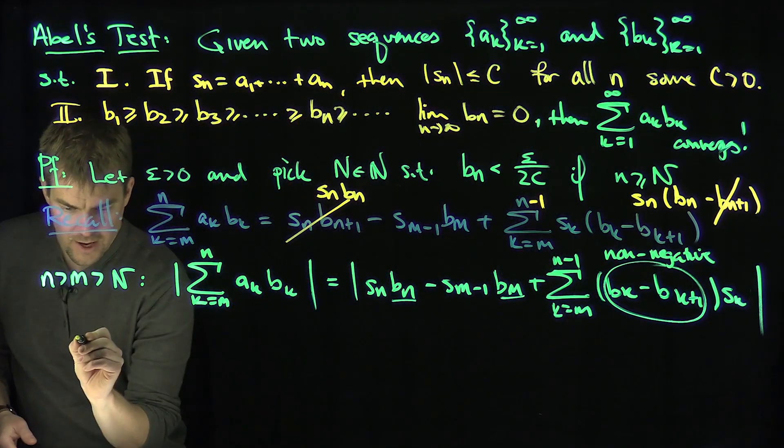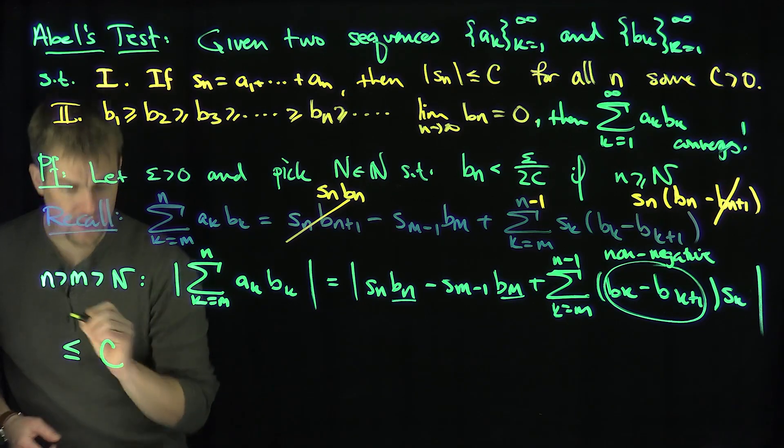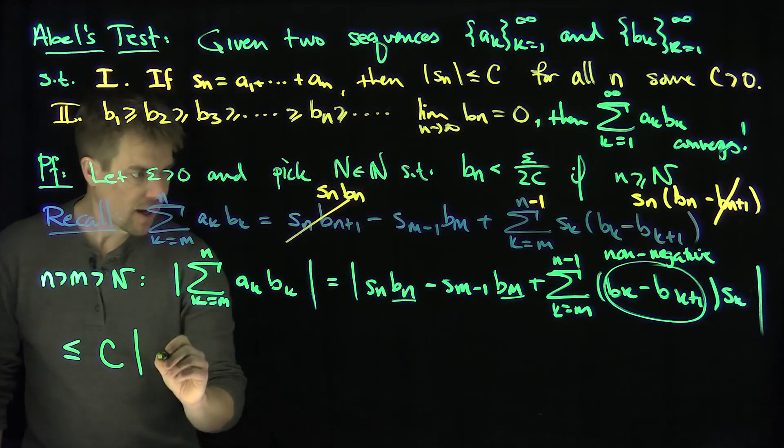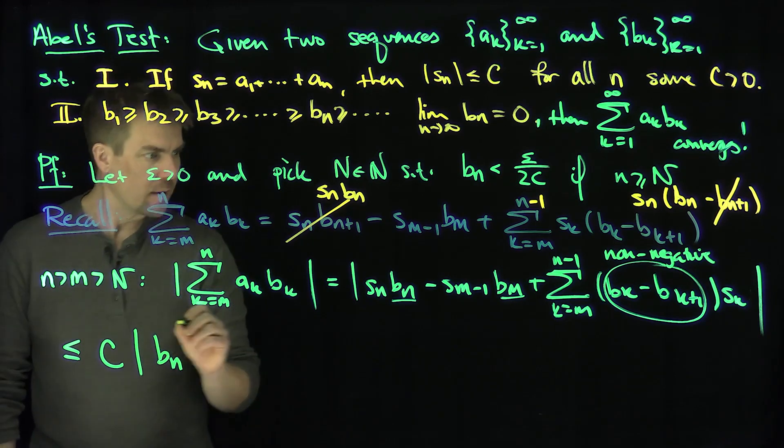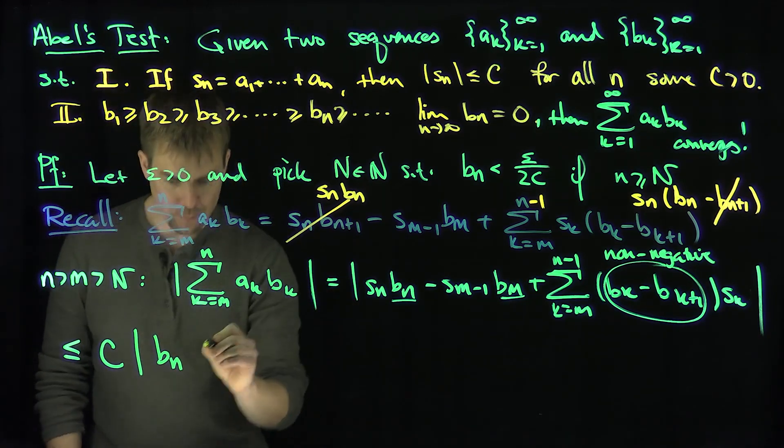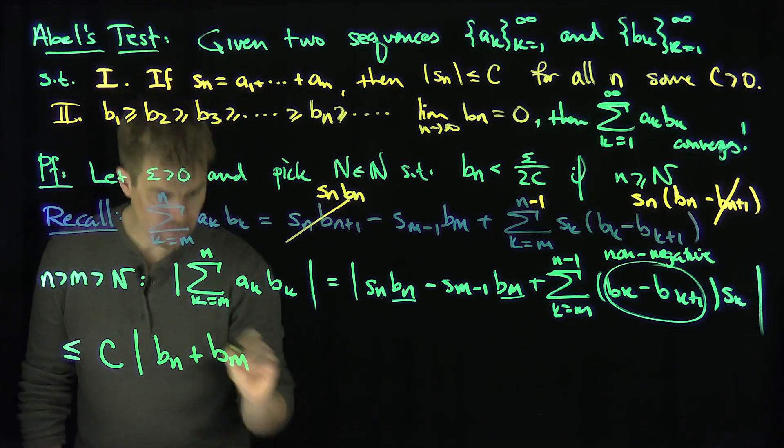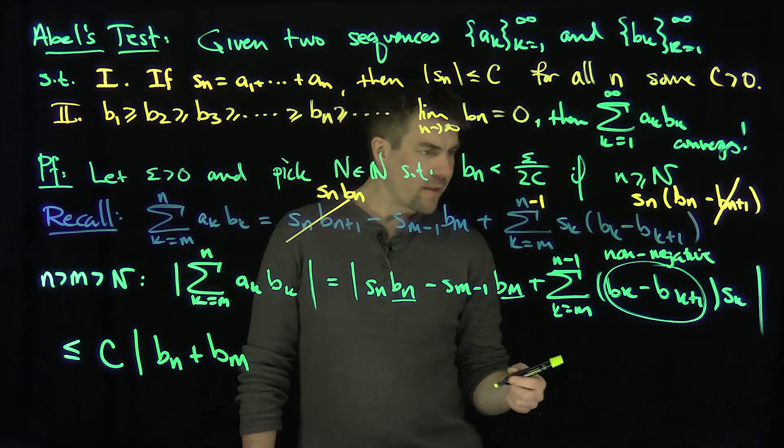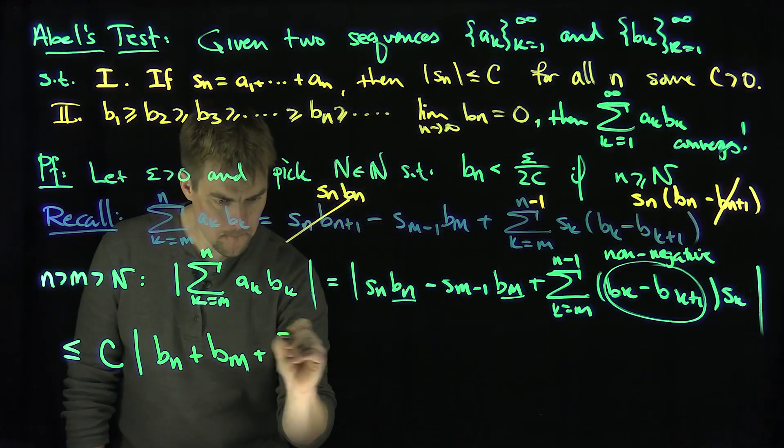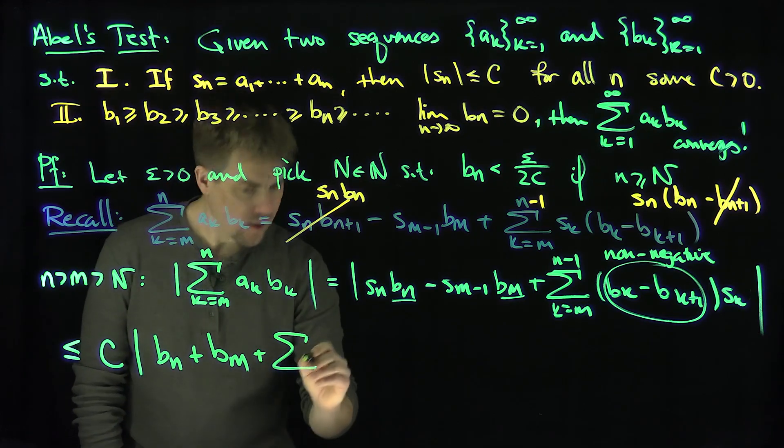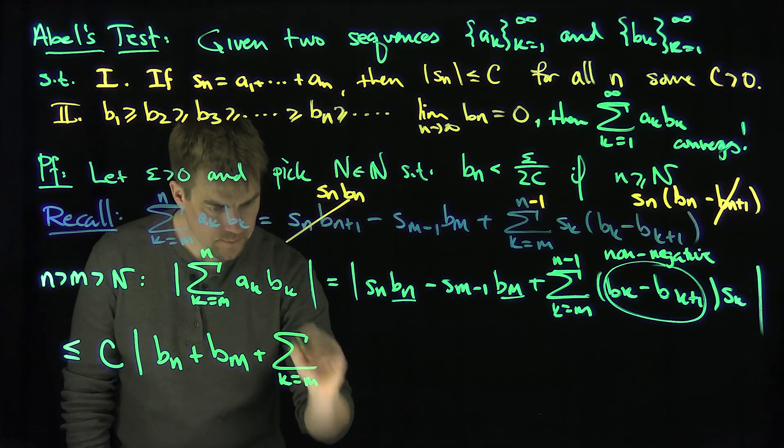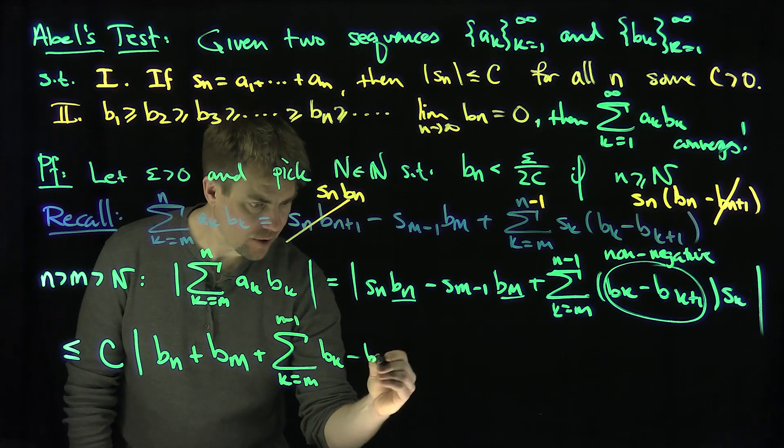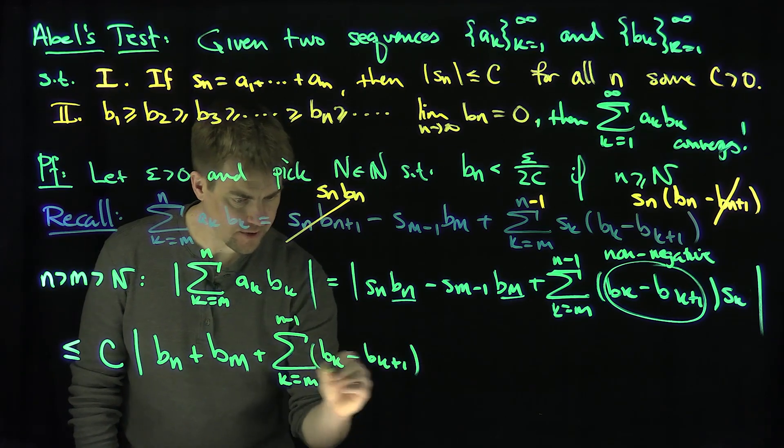So now I can say this is less than or equal to a constant c by the virtue of the fact that these are all non-negative. And then absolute value of b_n, and then I'm going to have a minus turn into a plus, so plus b_m, that makes it bigger. And then the sum k goes from m up to n-1 of b_k minus b_{k+1}.